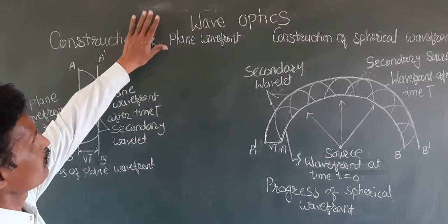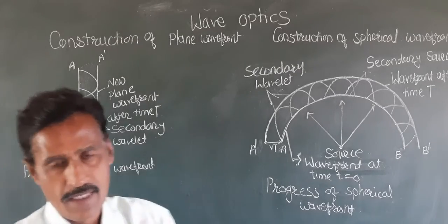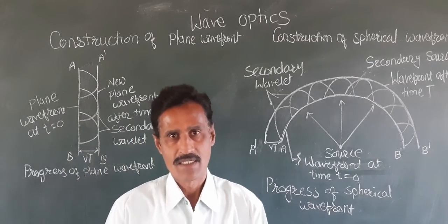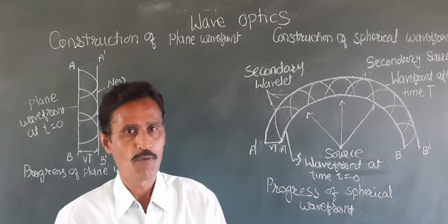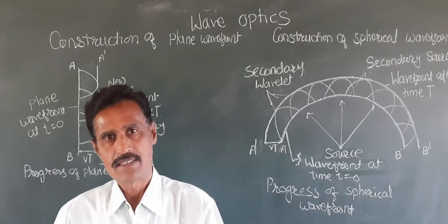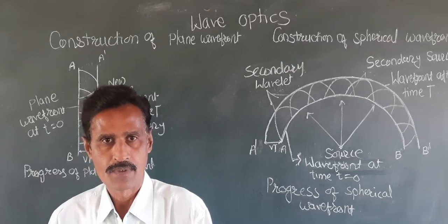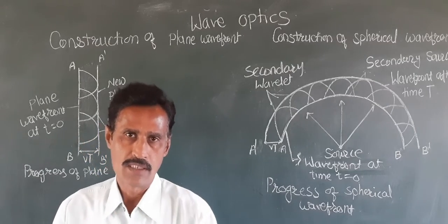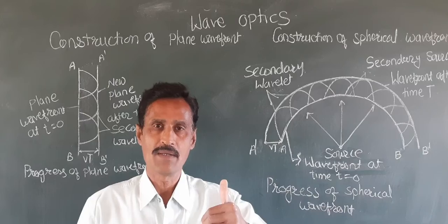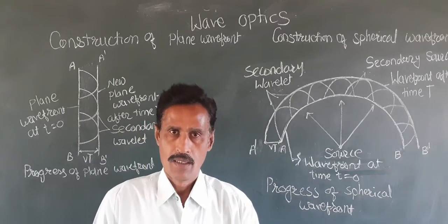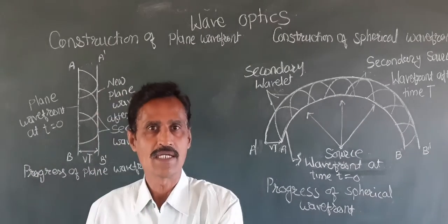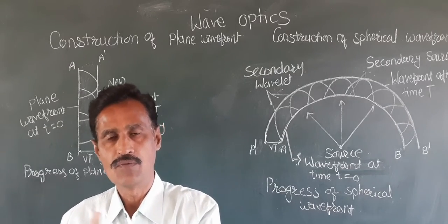In Chapter Wave Optics, in the last period we have seen Huygens' Principle. Huygens' Principle states that every point on the wavefront acts as a secondary source and emits secondary wavelets. They travel along the forward direction; in the backward direction their travel is ineffective. The envelope drawn to all these secondary wavelets represents the new wavefront.